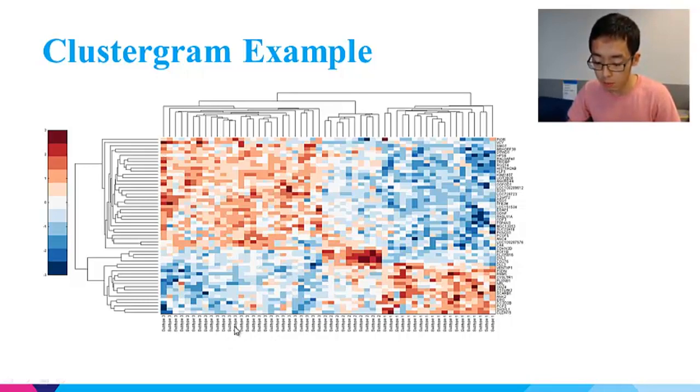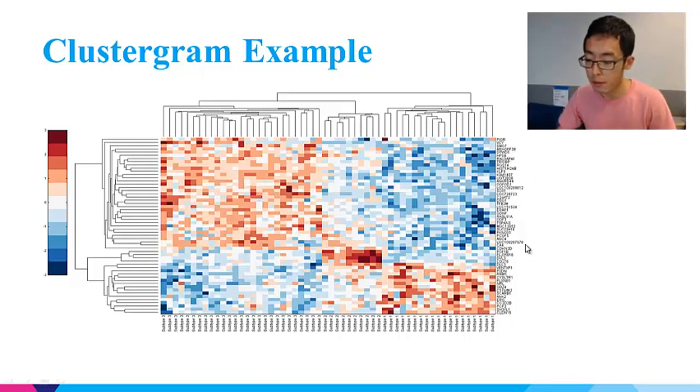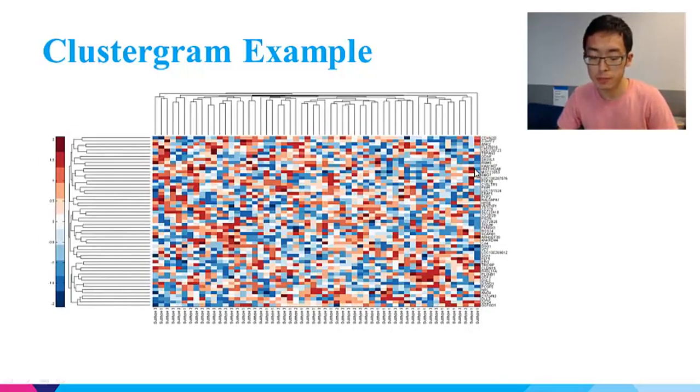Looking at the column labels, we found that the gene expression profiles of the same subtype nicely clustered together. There are three red clusters in the heat map corresponding to three subtypes. The genes at the upper side are highly expressed in cluster one, which is subtype three. These genes in the middle are highly expressed in subtype two. And these genes at the bottom are highly expressed in cluster three, which is subtype one.